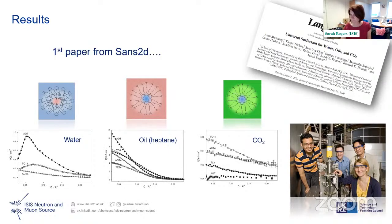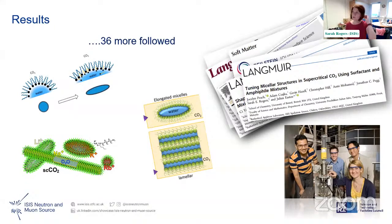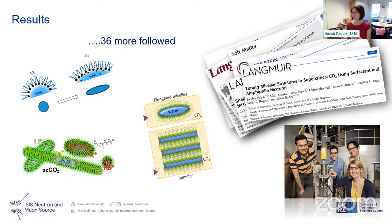Thirty-six more papers followed. We've done all sorts of tricks — changing the surfactant, changing the counterions — which allows us to change the shape of the micelles from spherical to elongated. That lets us play tricks with the viscosity of the CO2, which is useful for enhanced oil recovery or CO2 storage. We've also formed lamellar structures. Although we can see the viscosity changing, it's the neutrons that tell us why — we can see the particles elongating.